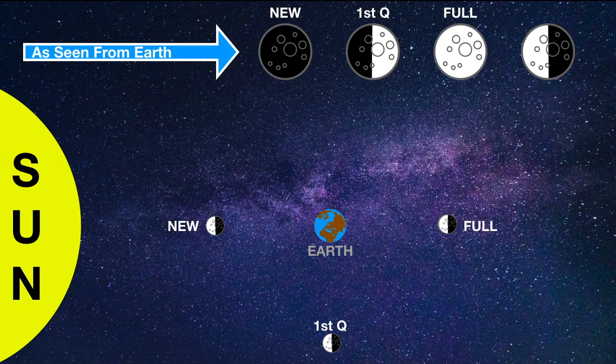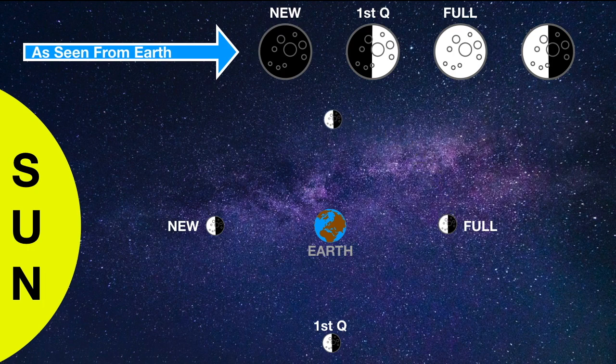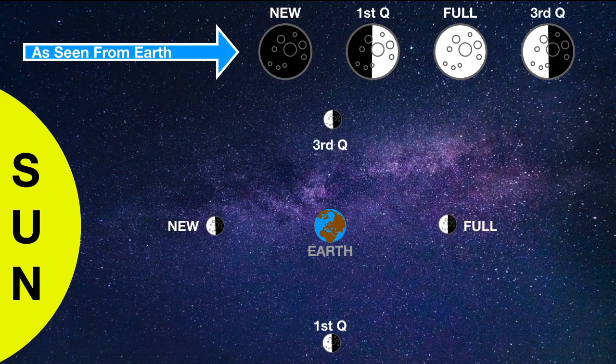The Sun, Earth, and moon once again form a 90 degree angle and the moon is said to be in its third quarter.